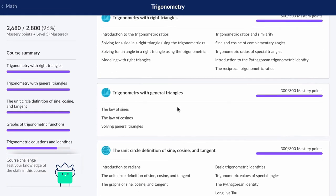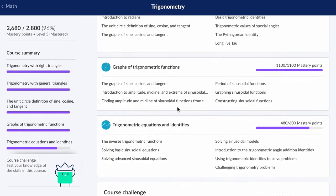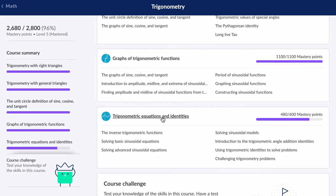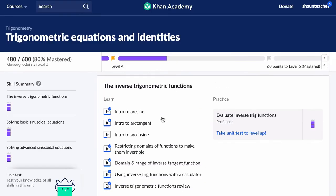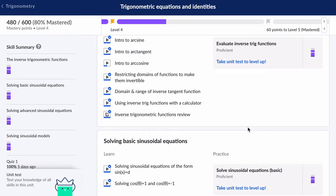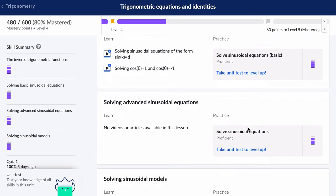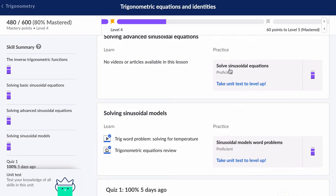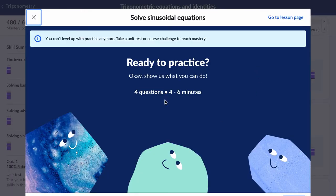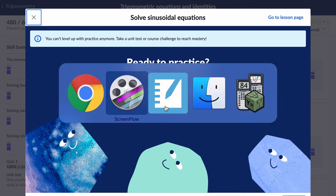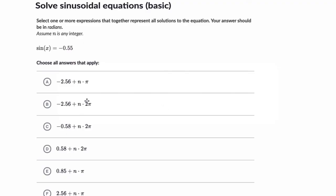Hello, in this video we're looking at Khan Academy trigonometry section, specifically equations and identities, and the third practice module which says solve sinusoidal equations. Let's do a couple of these problems together, and what you're going to notice is there are multiple answers. Importantly, how to find them.